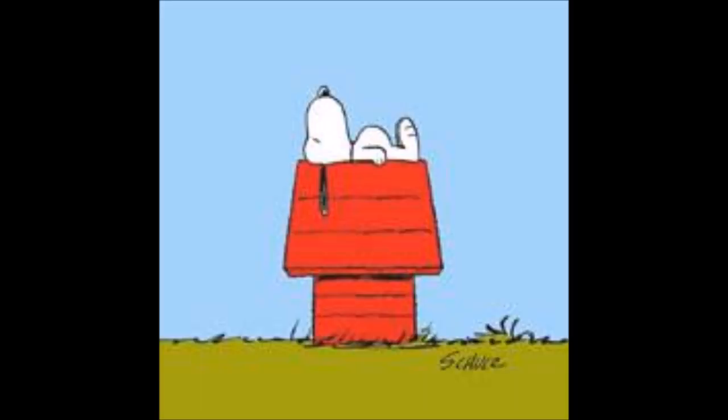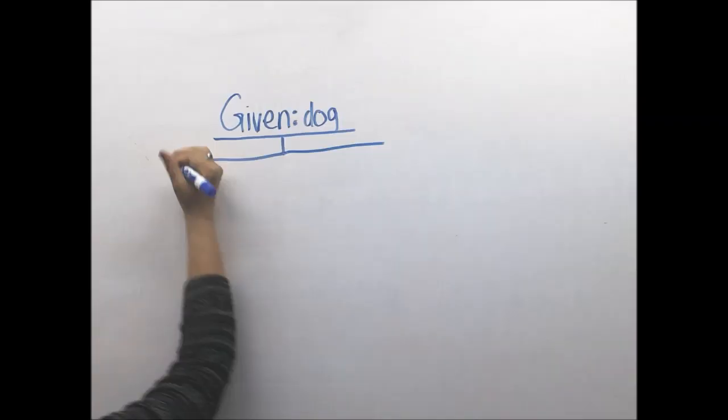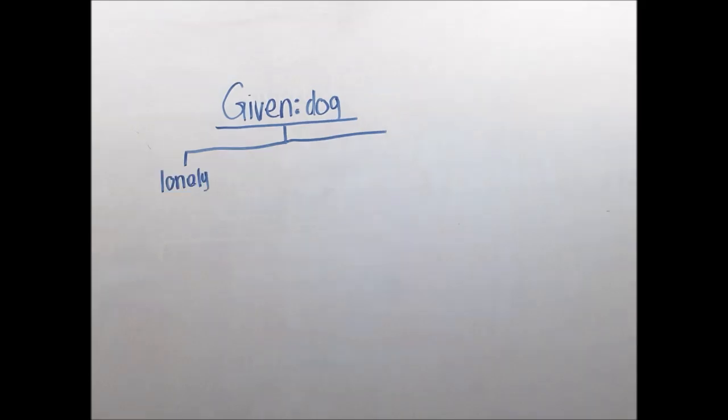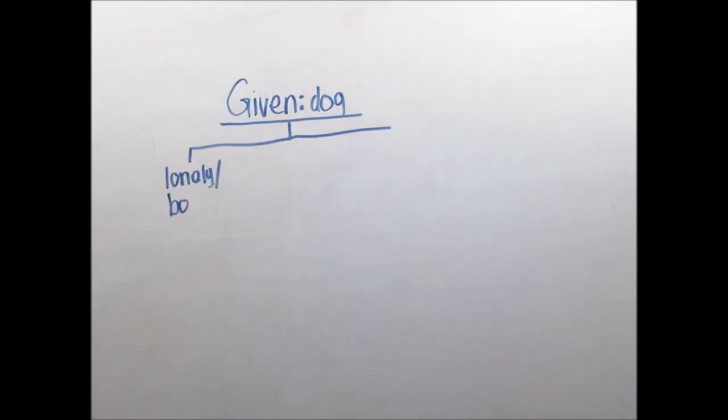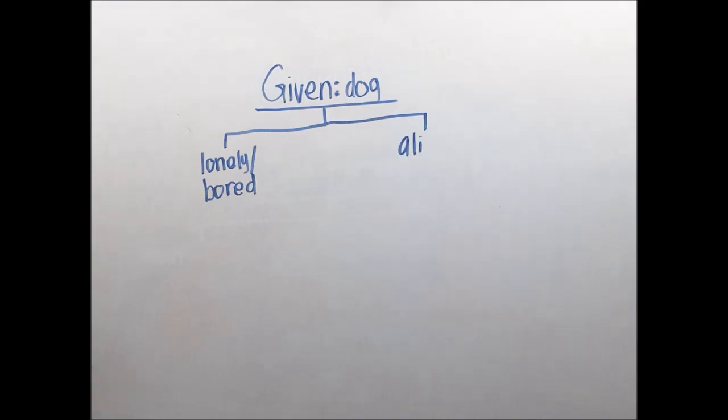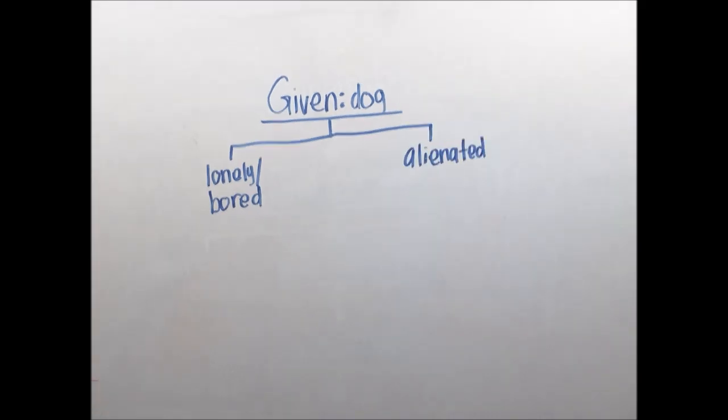Existentialism can be used to analyze the life of Snoopy, one of America's favorite comic characters. As we all know, Snoopy is a dog who lives in the primarily human society of the Peanuts comic strip, and he cannot change this given. Because he is a dog, he spends the majority of his life in Charlie Brown's backyard. He is lonely and bored because he does not have many opportunities to leave the backyard.